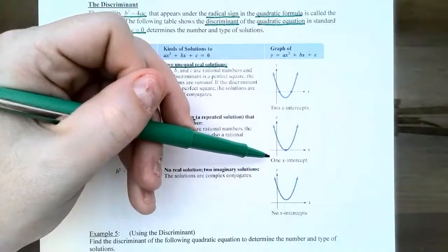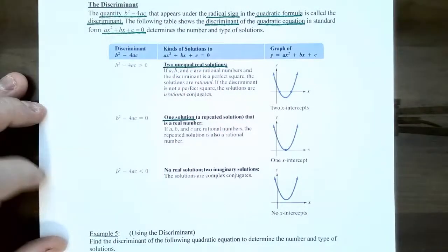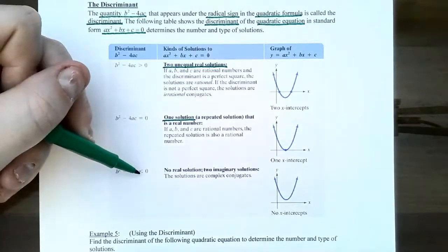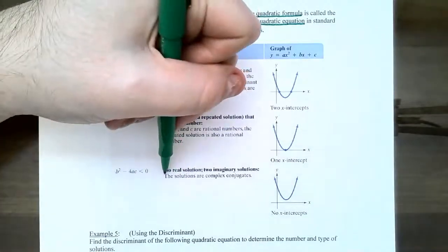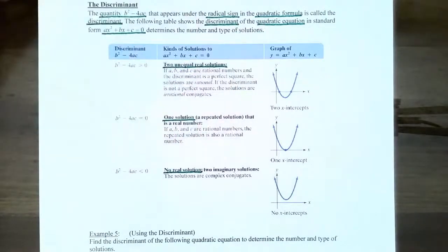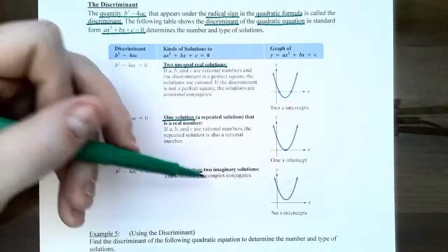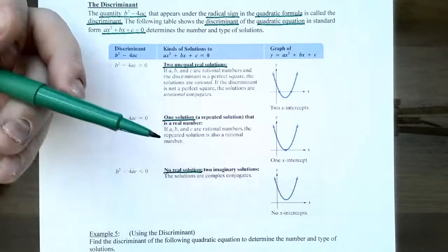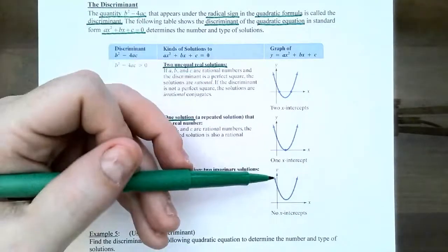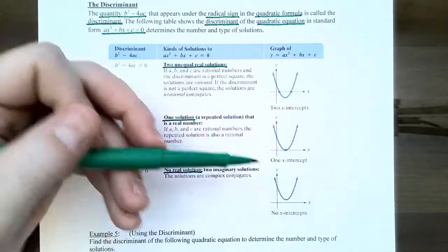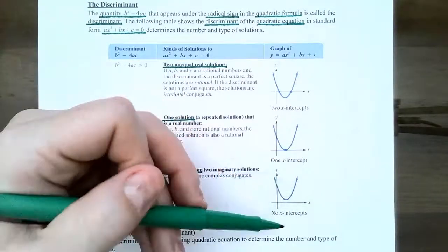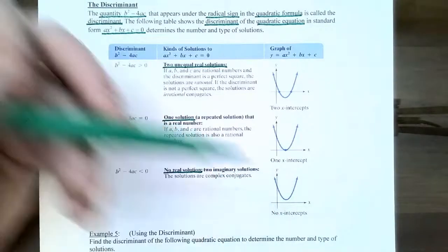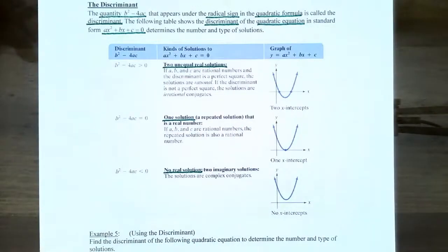If the discriminant is negative — what's inside the square root is a negative number — you have no real solutions. You can also say you have two imaginary solutions. In terms of graphs, the parabola stays entirely above or entirely below the x-axis, with no x-intercepts.